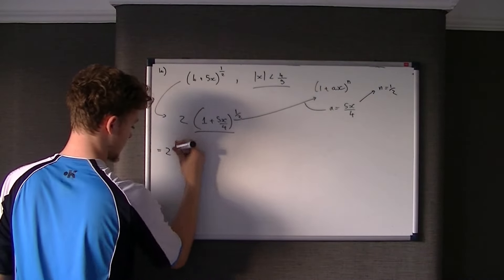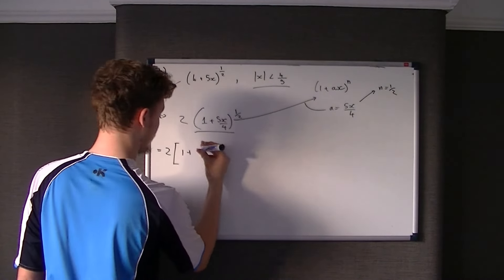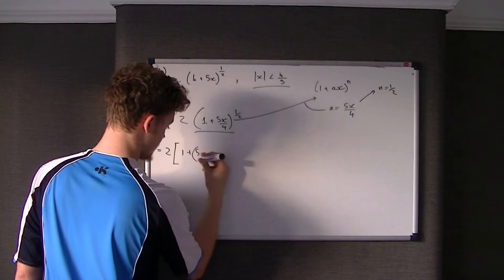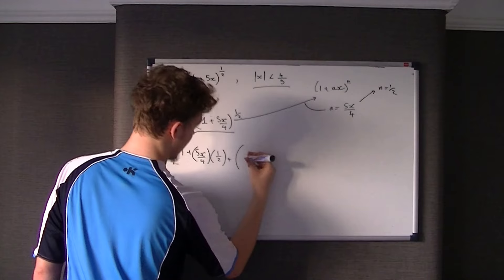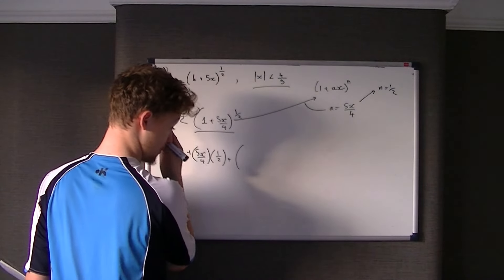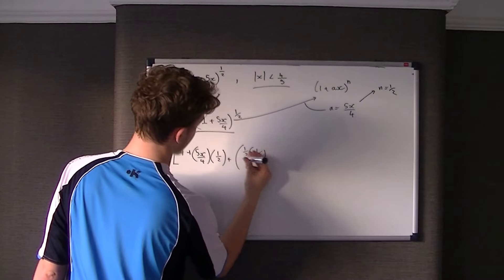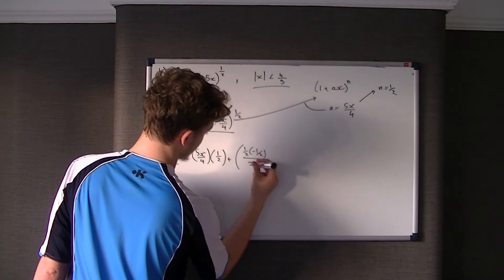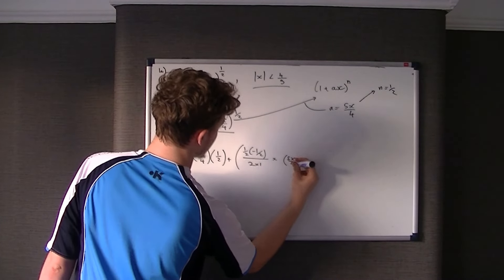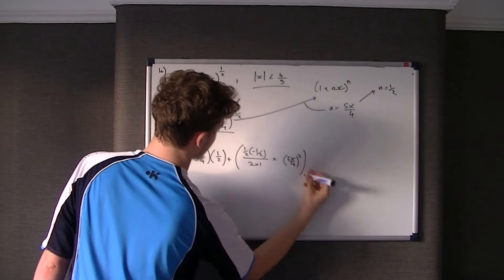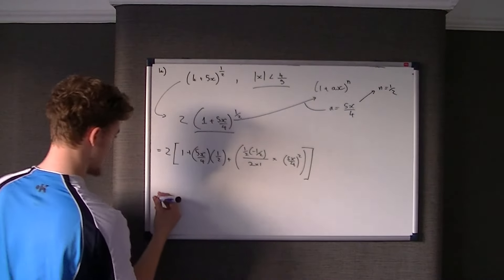When we do the expansion, we have to multiply everything by 2. The expansion is: 1 plus A times n — that's (5x/4) times (1/2) — then add n times (n minus 1) over 2 factorial, times A squared, which is (5x/4) all squared. That takes us up to the x squared term, which is what we want.